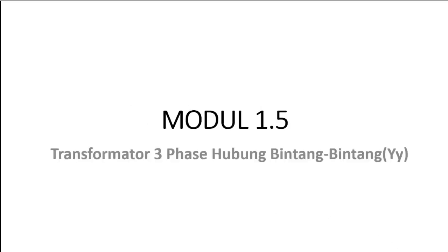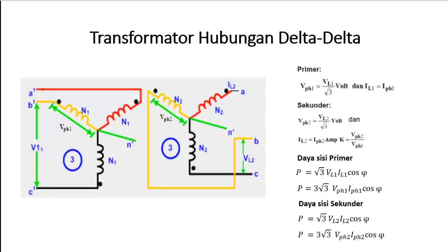Berkaitan dengan transformator 3 fase hubung bintang-bintang. Dalam transformator hubung bintang-bintang, di kumparan primer, tegangan di fase nanti sama dengan tegangan di jaringan dibagi dengan akar 3. Kemudian untuk arusnya, arus antara di jaringan dengan arus di fase itu akan bernilai sama, atau IL1 sama dengan I fase 1.